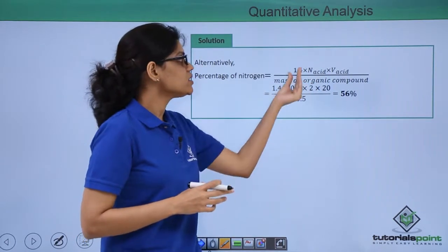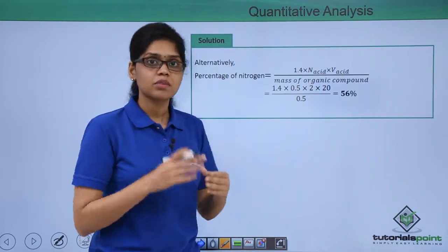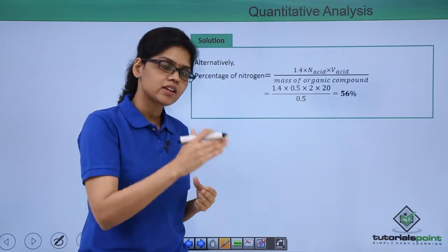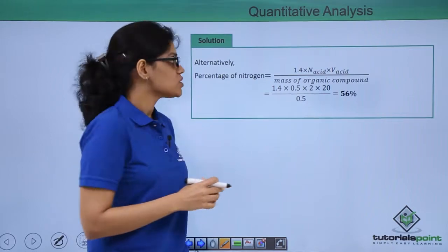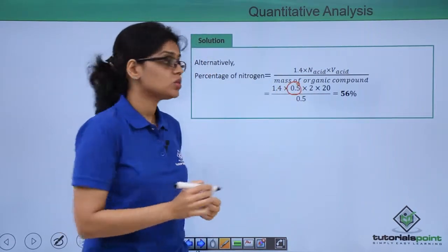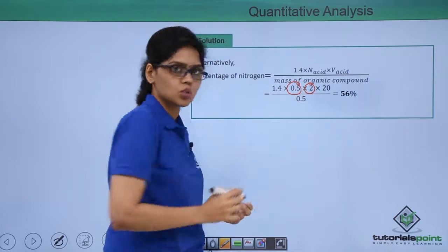We know that the normality of acid can be obtained by multiplying molarity with the basicity of acid. So molarity of H2SO4 is taken as 0.5, we know that the basicity of H2SO4 is 2.